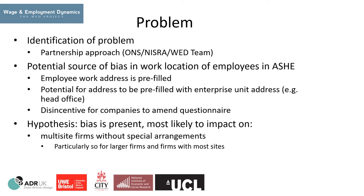We also expect any bias from multi-site firms with special arrangements to be limited. However, we expect to find evidence of bias with multi-site firms with standard paper submissions, and that this will potentially be greater for large employers who have the potential to have more employees in the ASH sample. We also expect the bias to be greater for enterprises with greater numbers of multi-sites, as it is administratively more burdensome to ensure that each employee has the correct workplace address.